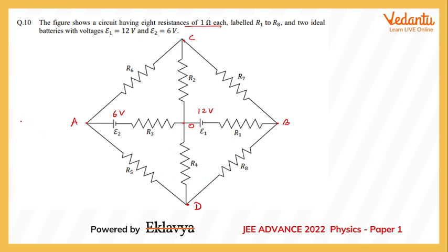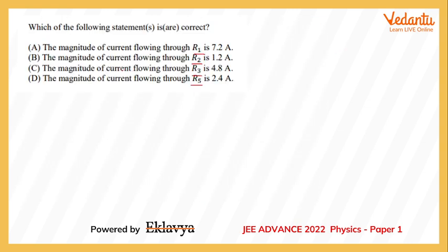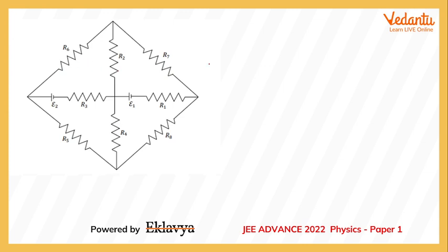This circuit is symmetric about the line AOB, or about a plane passing through AOB. We can flip the bottom half of the circuit over the upper half so that points C and D merge with each other. This allows us to convert the circuit into a simpler equivalent form.